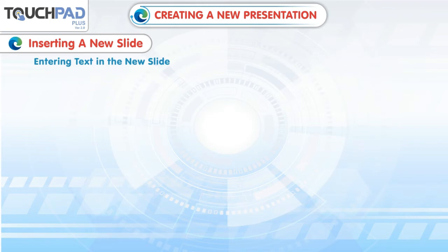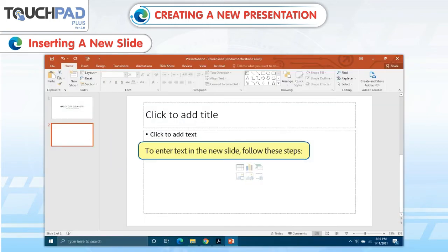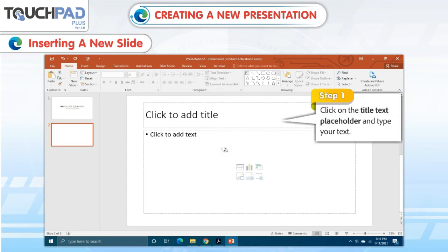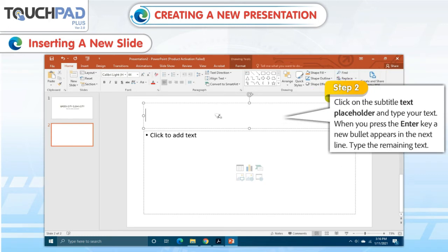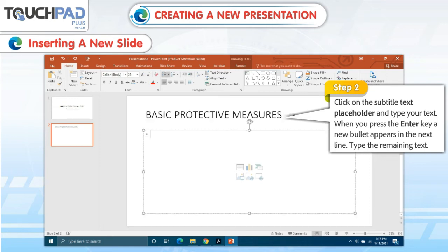Entering text in the new slide. To enter text in the new slide, follow these steps. Step 1: Click on the title text placeholder and type your text. Step 2: Click on the subtitle text placeholder and type your text. When you press the Enter key, a new bullet appears in the next line. Type the remaining text.